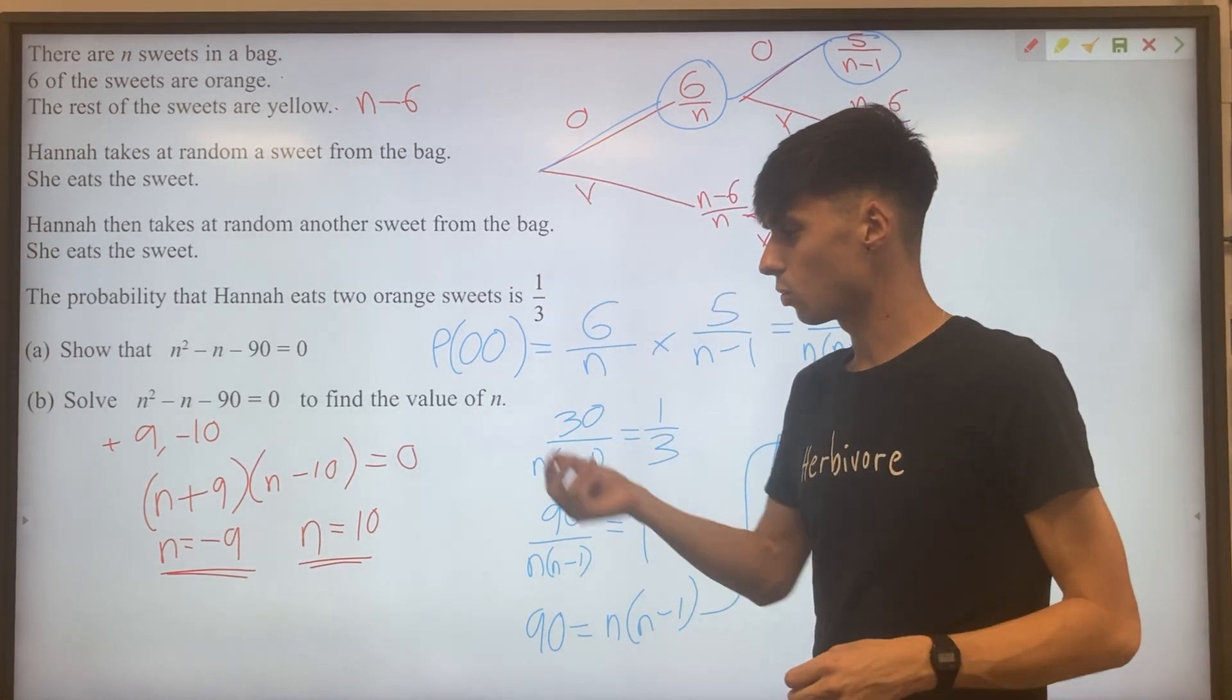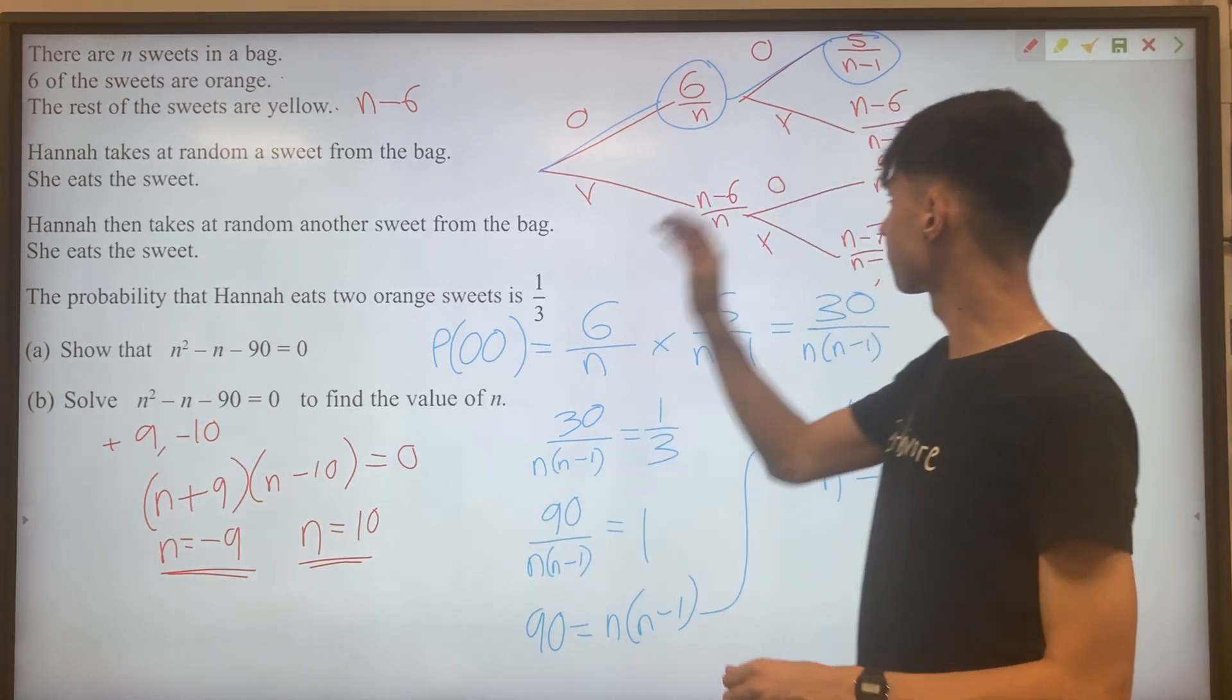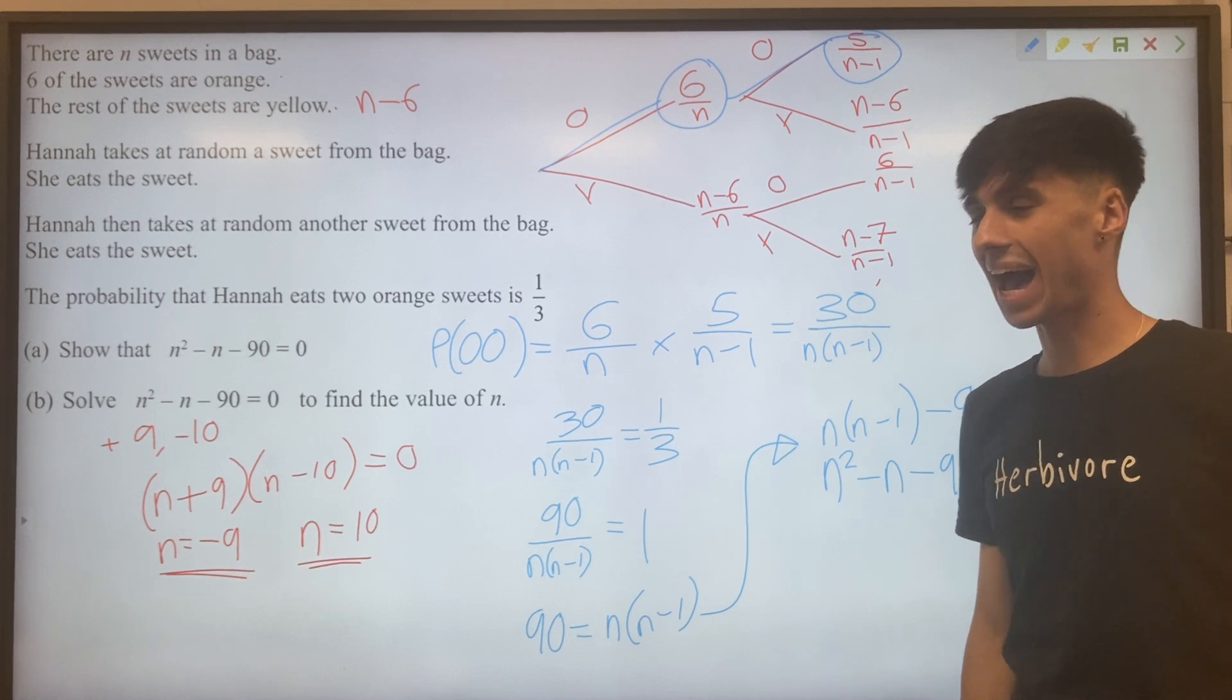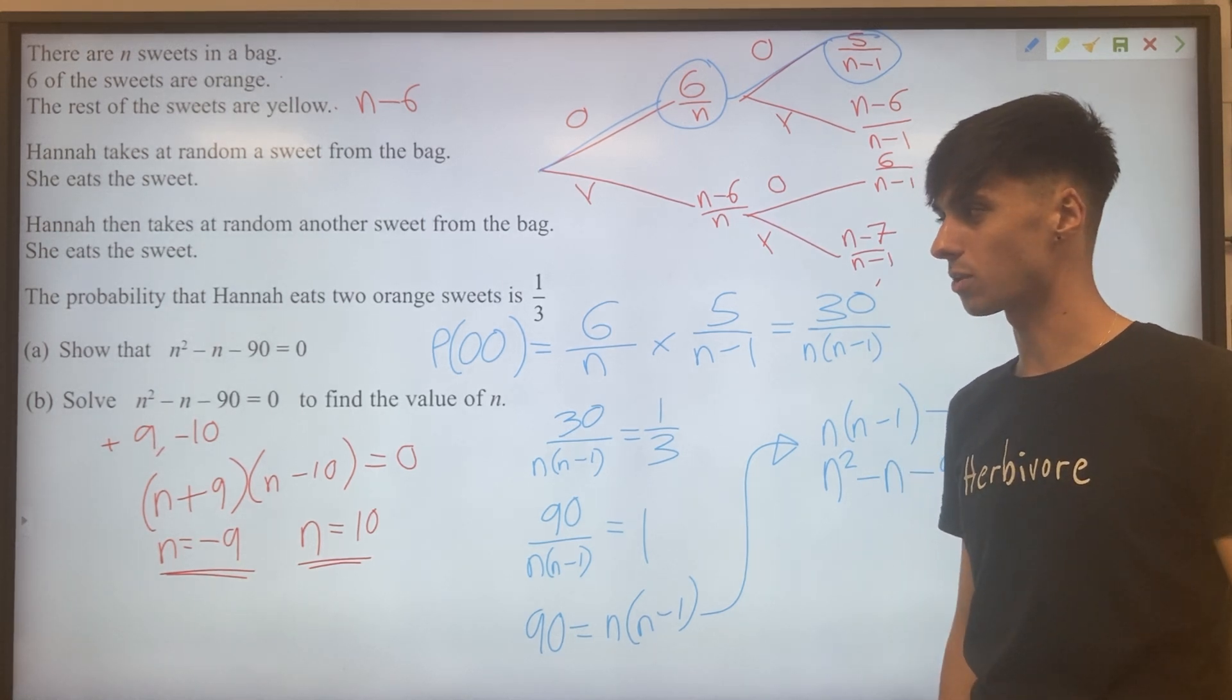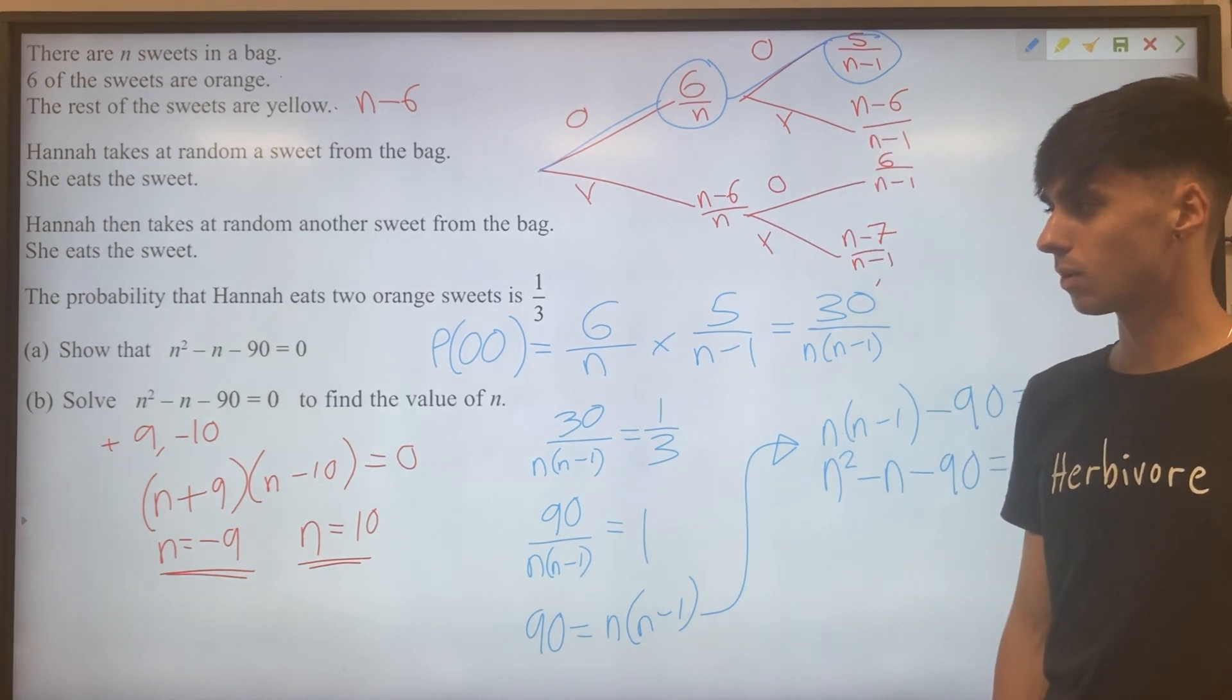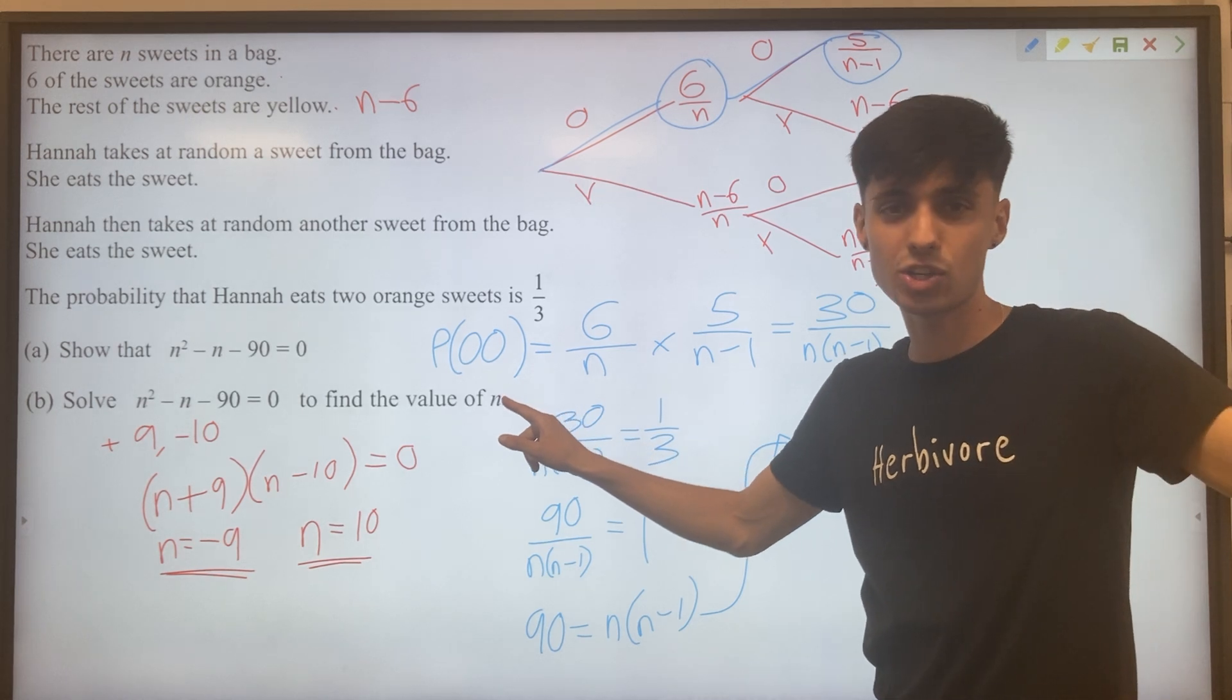Like most quadratics, we've got two answers here for our solution. However, one of them cannot be right in this question. And this is really getting to that higher level kind of thinking at GCSE. Finding the value of N, we need to think about what that actually means.